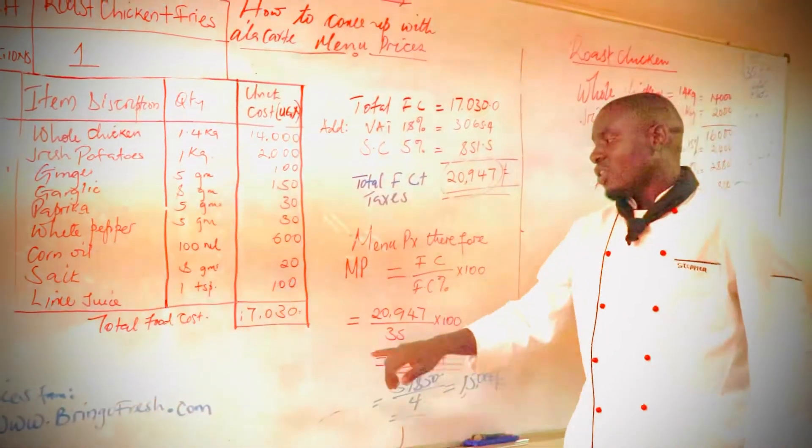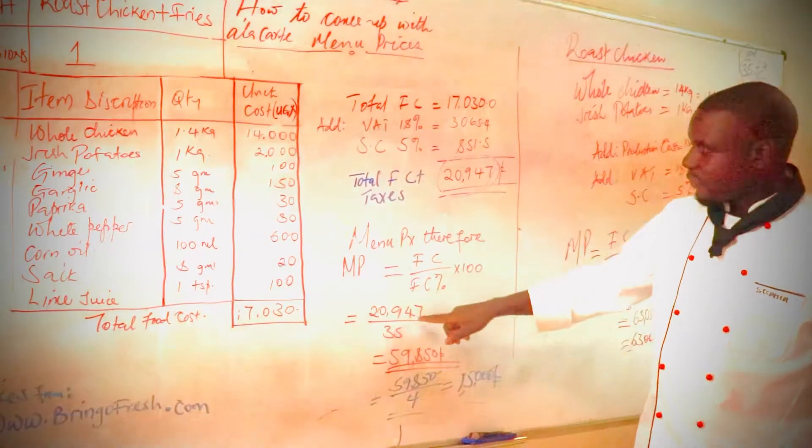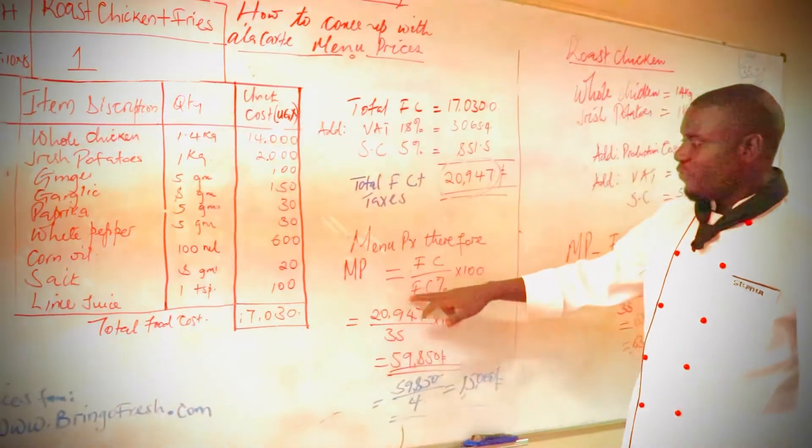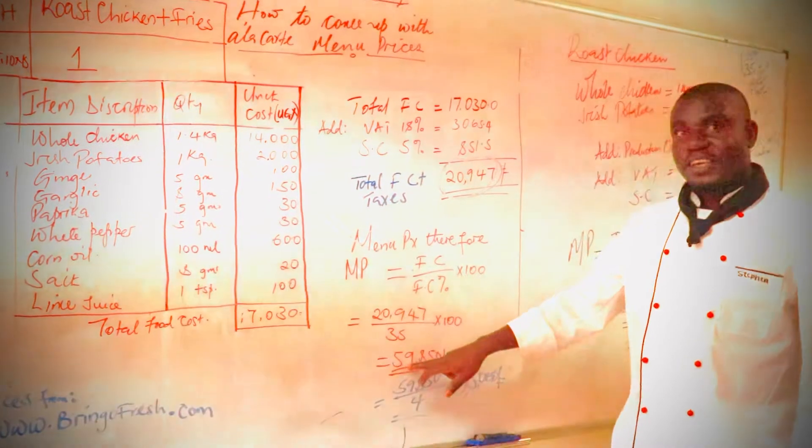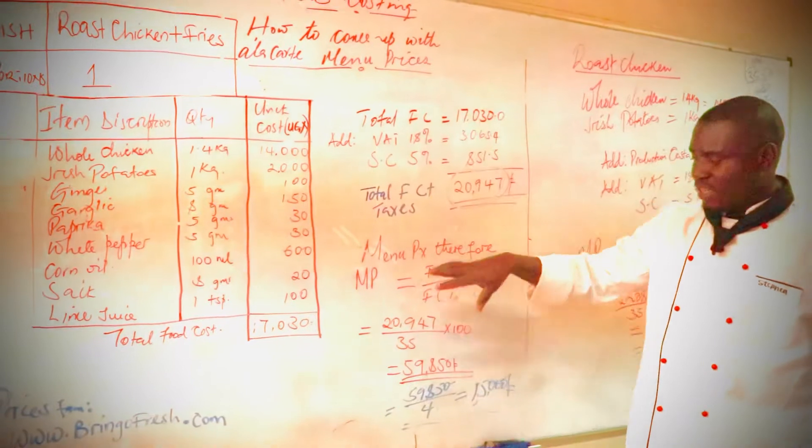So which equals 20,947 divided by 35% which is our food cost times 100. It gives us 59,850 shillings, this is for the whole chicken.